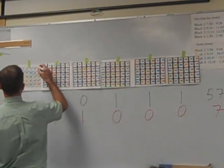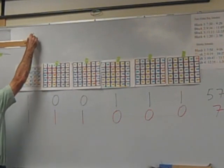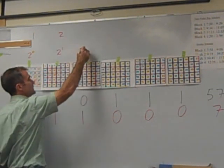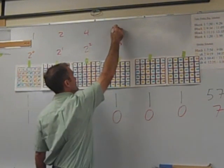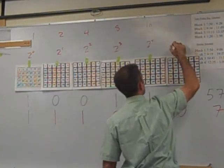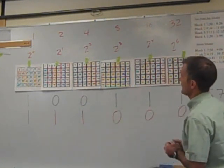So if the number has 2 to the 0 in it, it'll be in here. 2 to the 0 is equal to 1. 2 to the 1st is 2. 2 squared is 4. 2 to the 3rd is 8. 2 to the 4th is 16. And 2 to the 5th is 32. Okay?